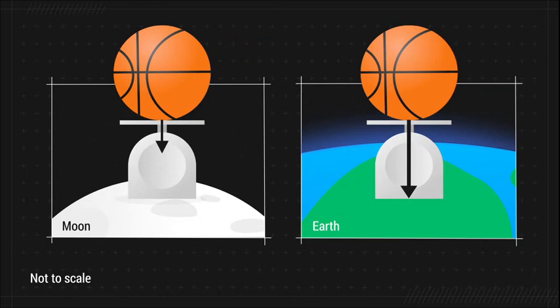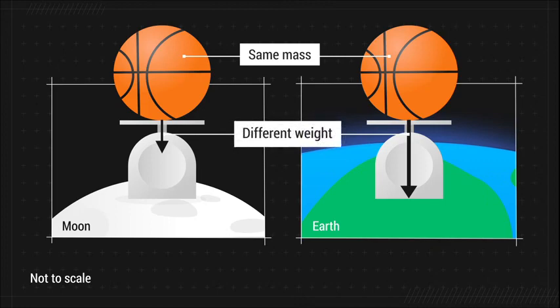Which of the following would change on the Moon? The amount of matter making up the basketball is still the same, so the basketball would have the same mass on the Moon. However, since the Moon has a smaller mass than the Earth, the basketball would experience a weaker gravitational pull and weigh even less on the Moon.